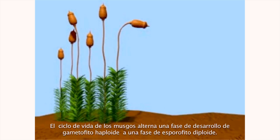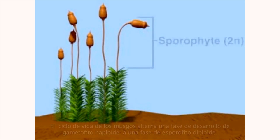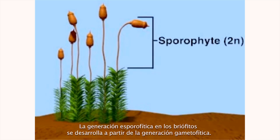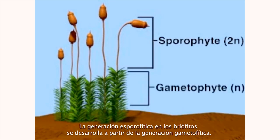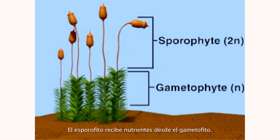Mosses alternate between the haploid gametophyte and the diploid sporophyte during their life cycle. The sporophyte generation in bryophytes develops from the gametophyte. Sporophytes receive much of their nutrition from the gametophyte.